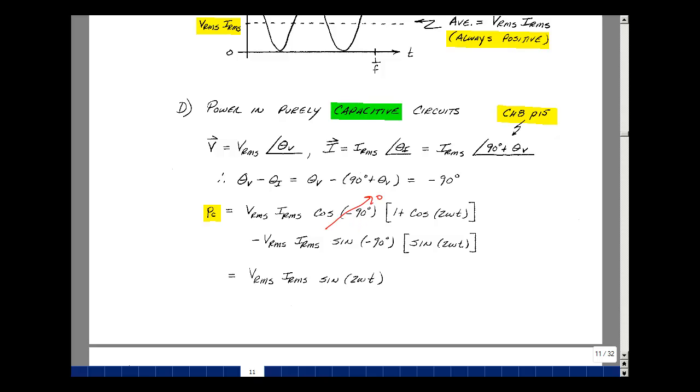So then the power absorbed by the capacitance is equal to V_RMS times I_RMS times the sine of 2ωt. So let's sketch that.